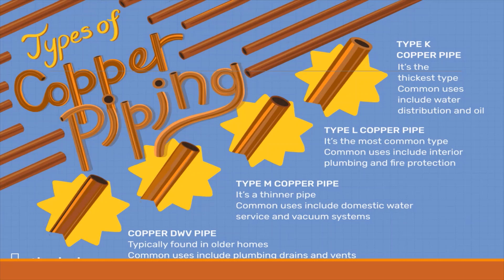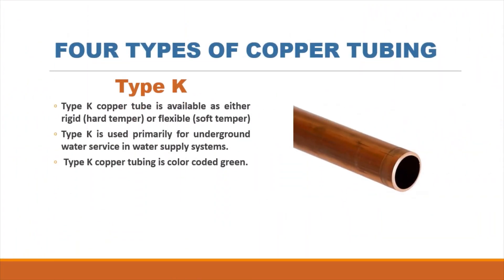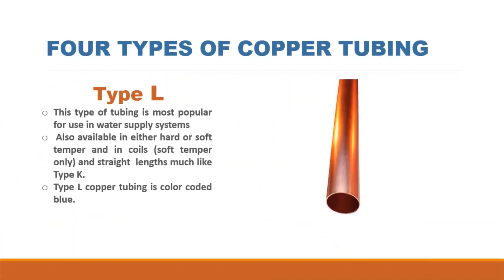There are four types of copper tubing: Type K, Type L, Type M, and DWV. Type K copper tube is available as either rigid or flexible and is used primarily for underground water service in water supply systems. Type L is the most popular for use in water supply systems, also available in either hard or soft temper, in coils and straight lengths much like Type K.